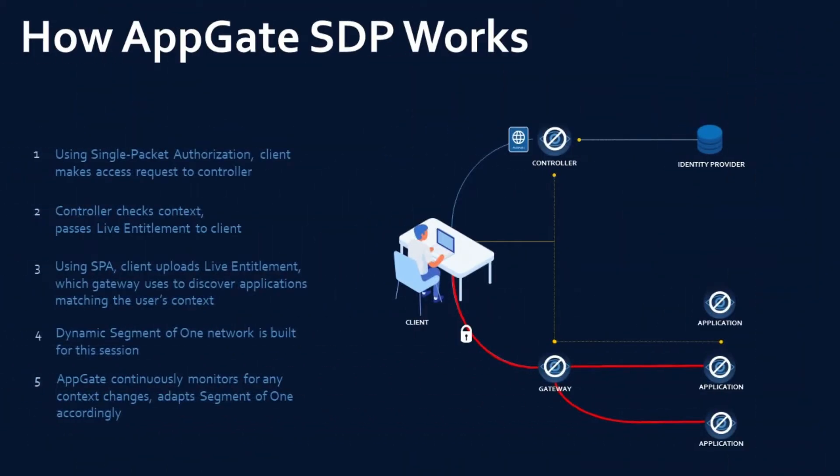The gateway effectively creates what we call a dynamic segment of one — a network built only for this session with this device and this user. So if the same user is connected with two different devices, they are not on the same segment of one. This is a great capability to mitigate and prevent lateral movement, stopping malicious actors who gain a foothold on one device from moving laterally to the crown jewels of the system. SDP continuously monitors for any context change and adjusts the segment of one accordingly — if you swap devices, if the time of day changes, or your persona context changes, your whitelisted access control changes directly.